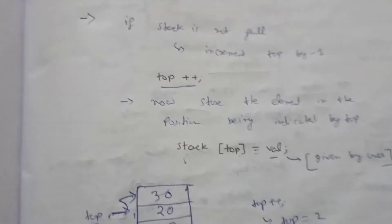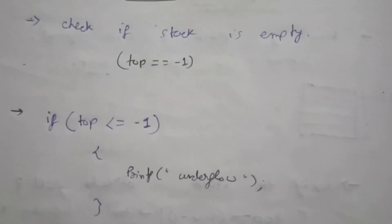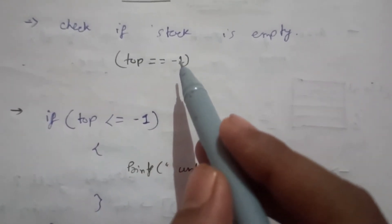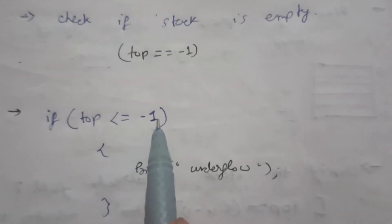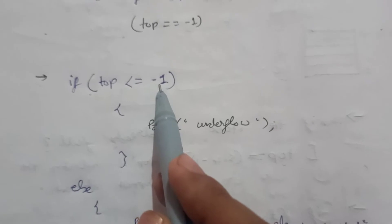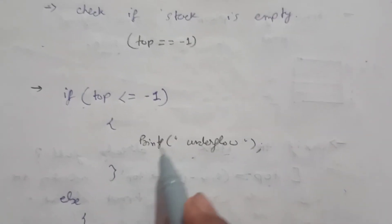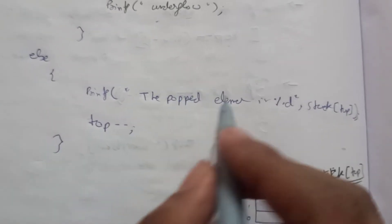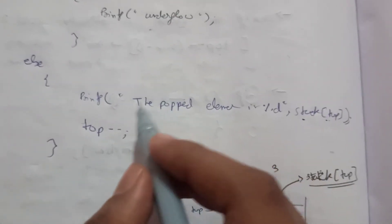For the pop operation, before popping we need to check if the stack is already empty — the underflow condition. When top is less than or equal to minus 1, the stack is empty. If we try to delete from an empty stack, it will be an underflow condition. In the else part, when the stack is not empty, we print the element being popped, which is stack[top].